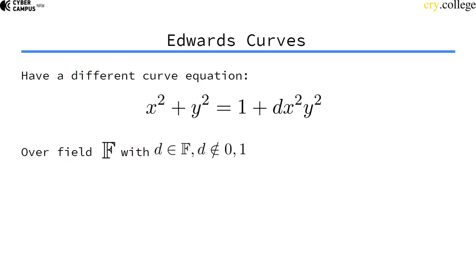So, Edwards curves have a different equation that looks quite different from the Weierstrass curve. And they are defined over a field with this d-parameter in the curve equation that can't be 0 or 1.